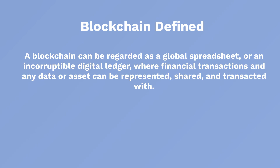Another definition: blockchain can be regarded as a global spreadsheet or an incorruptible digital ledger where financial transactions, any data, or any asset can be represented, shared, and transacted with. We can consider blockchain as a spreadsheet like a Google Sheet. The difference is that though a Google Sheet is distributed and many parties can work on it, it can be corrupted or changed. In a blockchain, it cannot be changed, and it can record any type of transactions shared with any person.